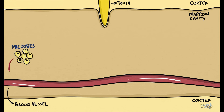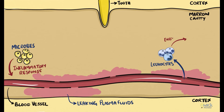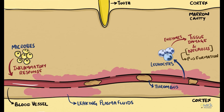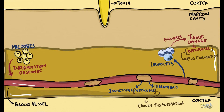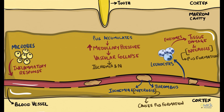Microorganisms elicit an inflammatory response and can locally cause increased vascular permeability, leading to accumulation of plasma fluids. Leukocytes are recruited to the site of inflammation and release numerous proteolytic enzymes that cause tissue damage and necrosis. Inflammatory responses also induce thrombus formation in blood vessels, causing ischemia and necrosis. As plasma fluids and pus accumulate in the medullary cavity, they increase medullary pressure, causing vascular collapse and further progression of ischemia and necrosis in the marrow cavity.